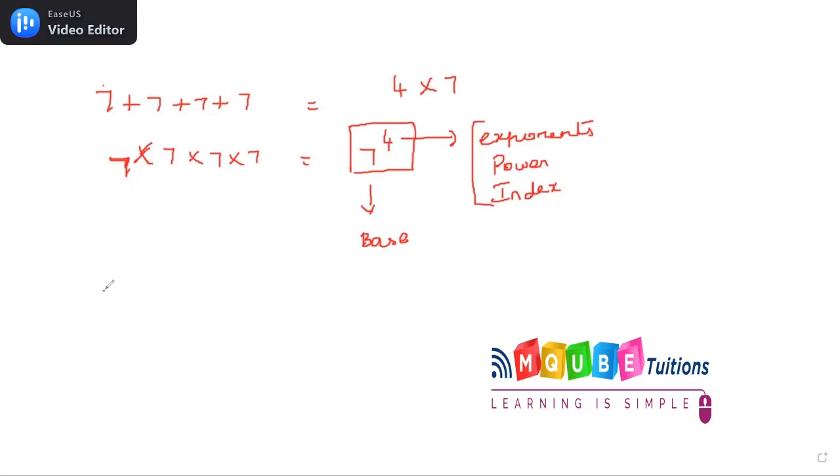And you know one thing, 7 to the power of 4 is not the equivalent value of 4 to the power of 7. The 7 to the power of 4 will be equivalent to 7 multiplied by itself 4 times.